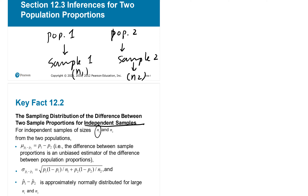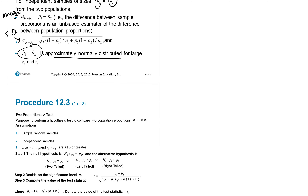Sample one has size n1 and sample two has size n2. We define mu sub p1-hat minus p2-hat to be p1 minus p2 — meaning the mean of the difference is always the difference of the populations. The standard deviation is defined as: square root of p1(1 minus p1)/n1 plus p2(1 minus p2)/n2, assuming approximately normal distribution for large n1 and n2.